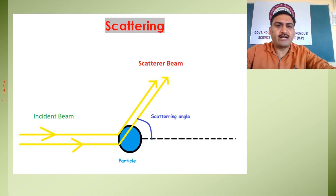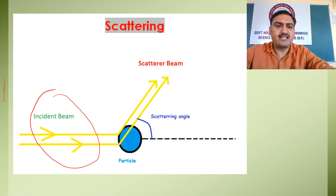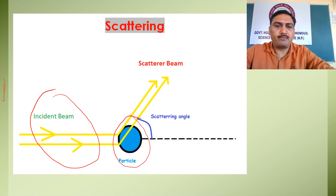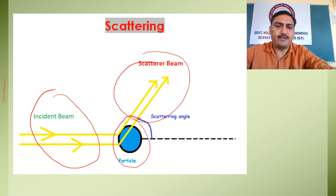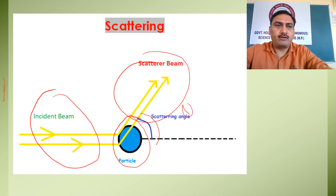You can see in this figure: this is our incident beam, this is our target particle or target material, and here you will have a scattered beam. This scattered beam is scattered at a certain angle theta.